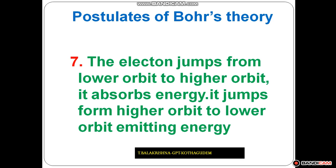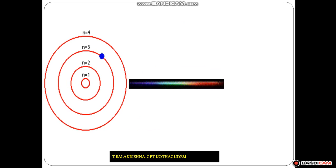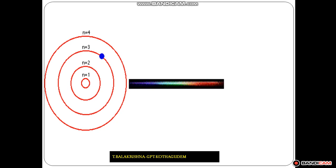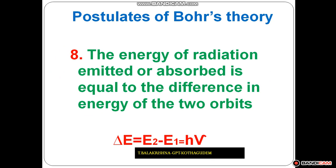The electrons jump from a lower orbit to a higher orbit absorbing energy. If they jump from a higher orbit to a lower orbit, they emit energy, which is called radiation energy. Looking at the diagram, electrons jumping from the fourth orbit to the second orbit lose some energy, because they move from a high energy orbital to a low energy orbital. That energy difference is called radiation energy, calculated by the formula ΔE = E2 - E1 = hν.